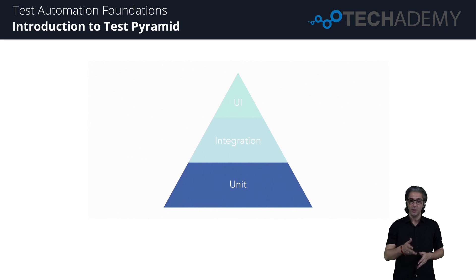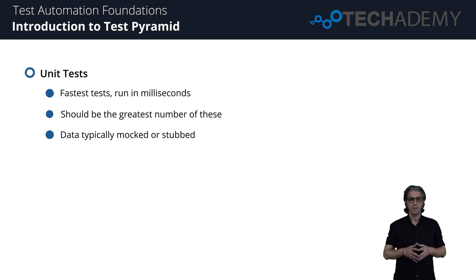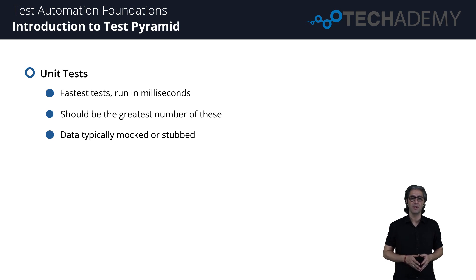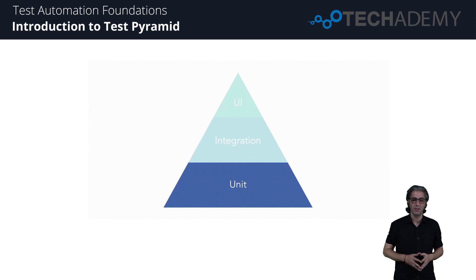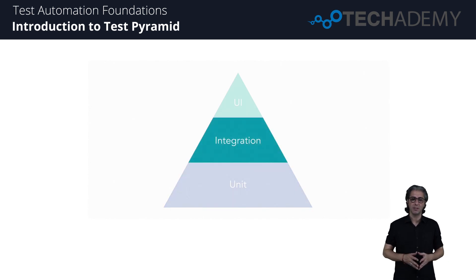Unit tests are always at the base of the pyramid. They test a single function by calling that function and passing in various values, confirming that the right results are returned. They are the fastest tests, running in a matter of milliseconds. There should be the greatest number of these tests. Data for a unit test is typically mocked or stubbed — ways to create objects with certain values.